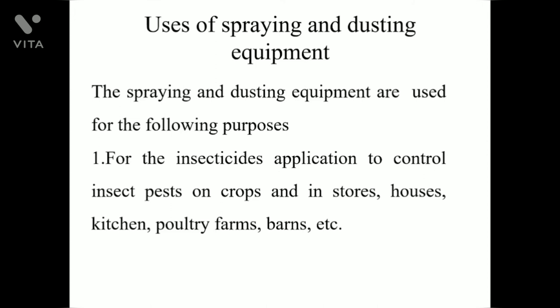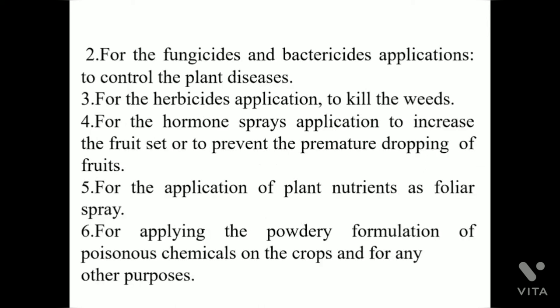Uses of spraying and dusting equipment. The spraying and dusting equipment are used for the following purposes: first, for the insecticides application to control insect pests on crops and in storehouses, kitchens, poultry farms, barns, etc. For the fungicides and bactericides applications to control plant diseases. For the herbicides application to kill the weeds. For the hormone sprays application to increase the fruit set or to prevent the premature dropping of fruits.